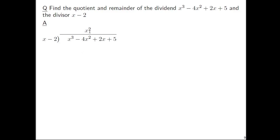So x squared times x minus 2, if you distribute, you'll have x cubed minus 2x squared, which we should write here. But since we're going to subtract x cubed minus 2x squared, let's go ahead and multiply by negative 1 already, and you'll have negative x cubed plus 2x squared. Then we can add, because we've already distributed in the minus sign.